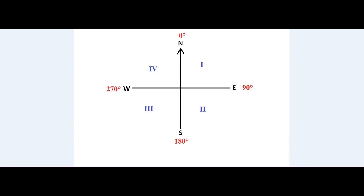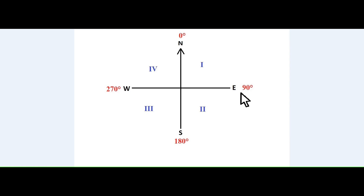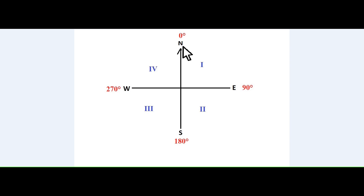First of all, using meridians, the quadrants are divided into 4 in clockwise direction. In clockwise direction, 0 corresponds to north, east corresponds to 90 degrees, south corresponds to 180 degrees, and west corresponds to 270 degrees. Again, on completing one full circle, north corresponds to 360 degrees.